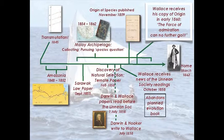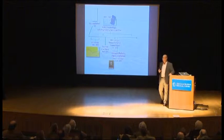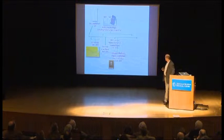That was 1855, consilience mode. A few years later — 1858 — he hits upon natural selection with the Ternate paper. And as we've heard, he sends this fatefully to Darwin, with whom he had been in correspondence for some time.